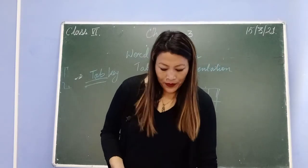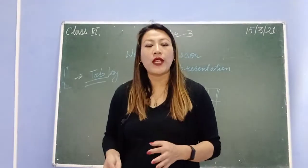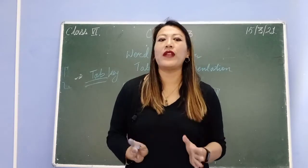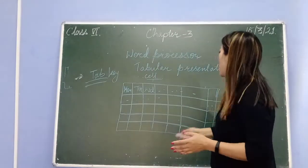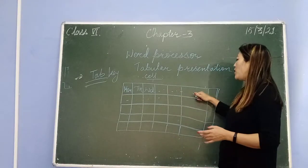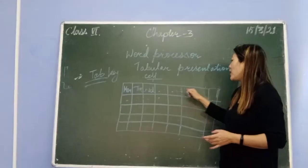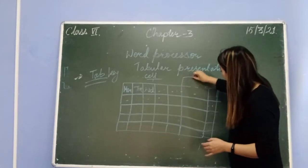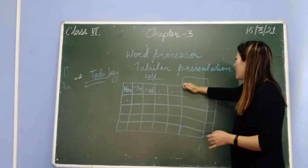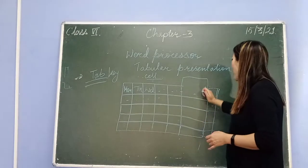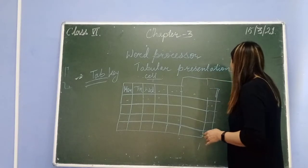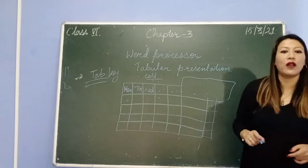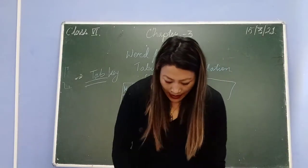You can also change the height and width of the table. Height refers to how tall the rows are, and width refers to how wide the table is. You can increase or decrease both, and this also comes under formatting a table.